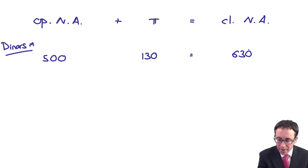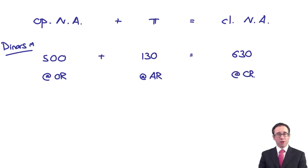And in that situation, it's all fine. 500 plus 130 is equal to 630. But what's the issue? Well, the issue is that the opening net assets will have been at last year's closing rate, so this year's opening rate. The profit is at the average rate, and the closing net assets will be at the closing rate. And that's where problems arise.